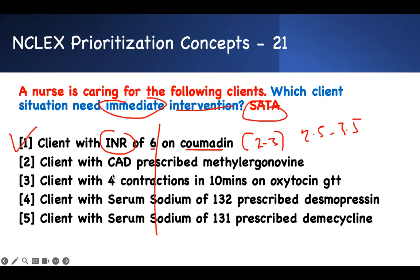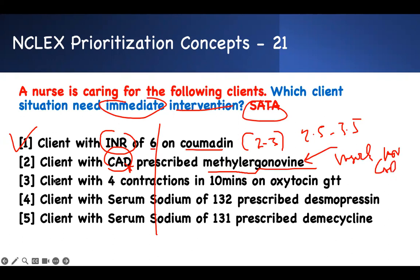Client with INR of 6 on Coumadin — if you're on Coumadin, INR should be 2 to 3; for a prosthetic valve, 2.5 to 3.5. An INR of 6 means the patient is bleeding. Client with coronary disease on methylergonovine — this works by vasoconstriction, can increase hypertension and worsen coronary symptoms, so we need to intervene.